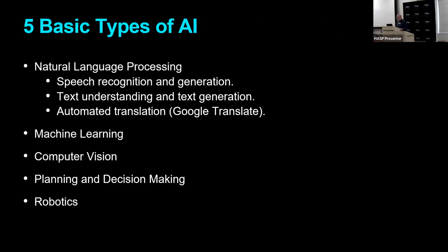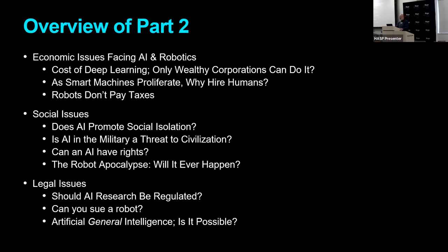As you'll recall, last week we defined five basic types of artificial intelligence: natural language processing, which has several subcategories; machine learning, which turns out to be the hero of our story; computer vision; planning and decision-making; and robotics. Today we're going to look at all the issues concerning artificial intelligence in our society. I've broken them into three basic categories: economic issues, social issues, and legal issues.